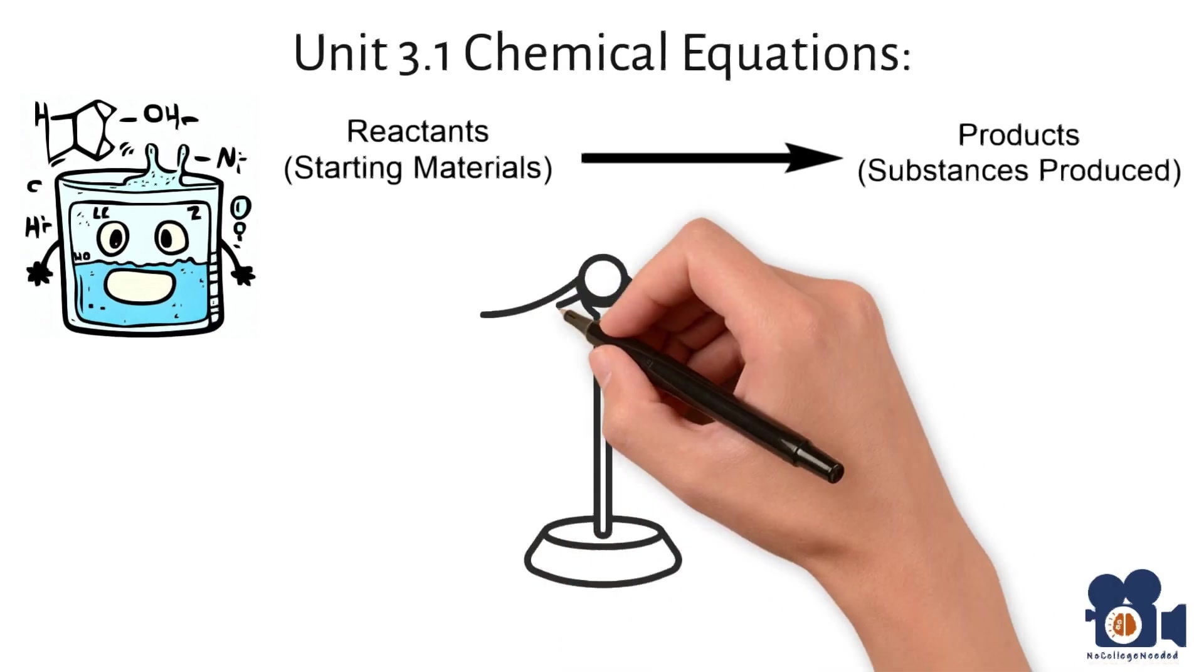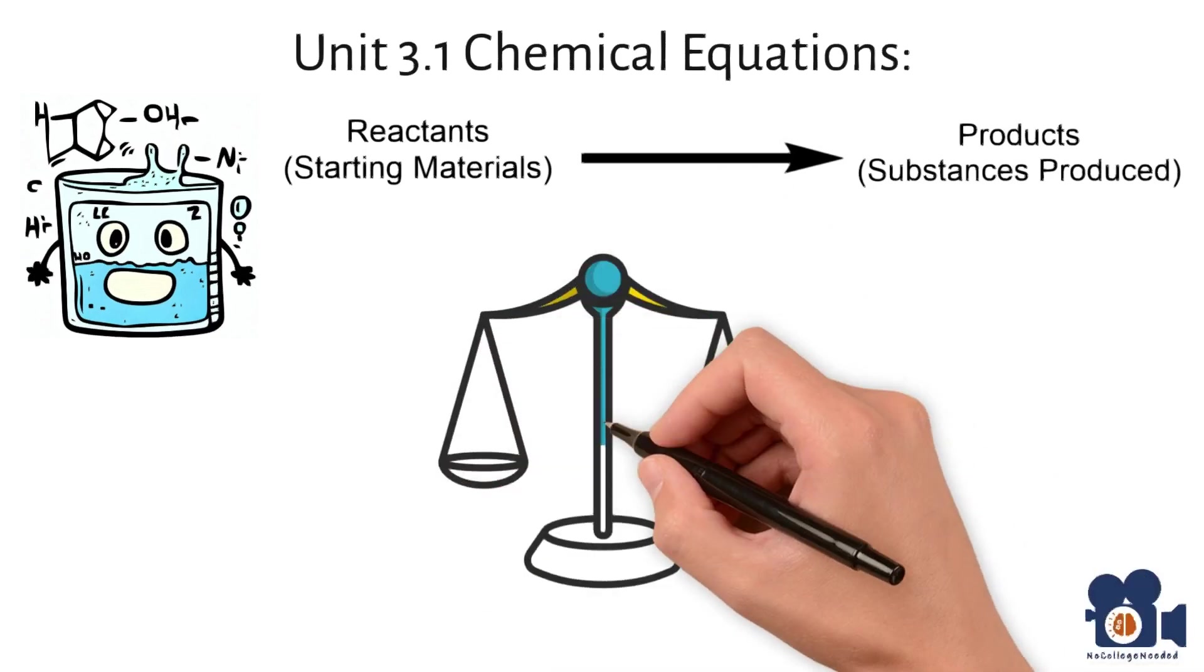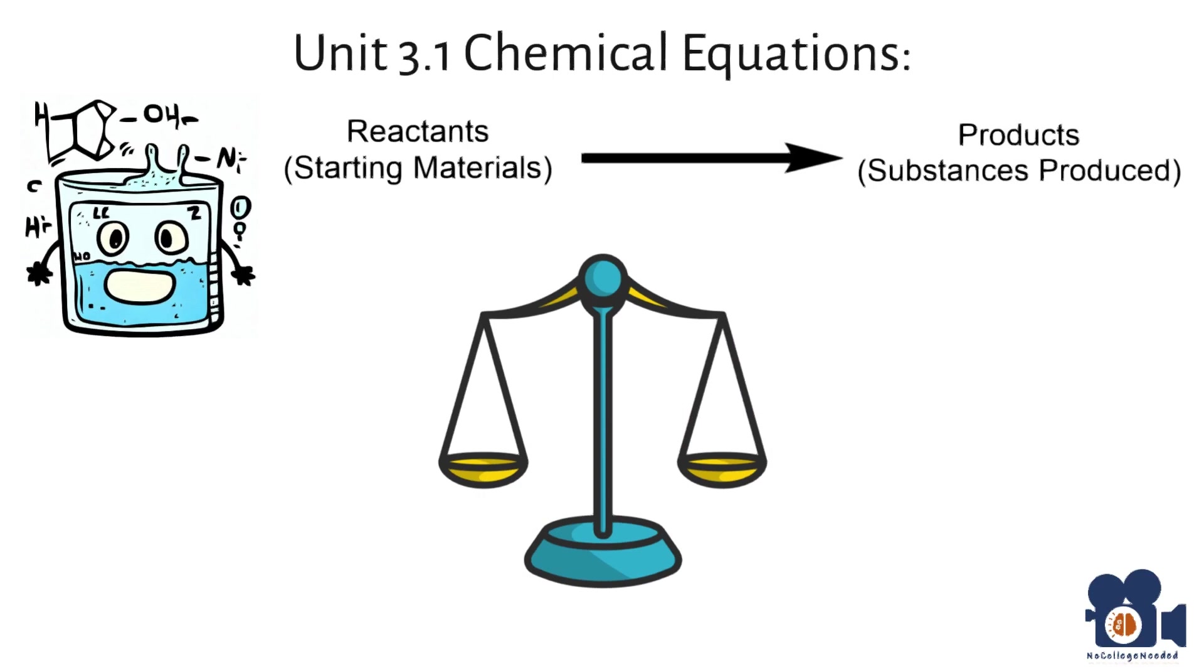Balancing chemical equations is a key factor of being a chemist because it allows us to accurately calculate the amount of reactants and products needed for a reaction and to predict how much of a product will be formed given a certain amount of reactant.